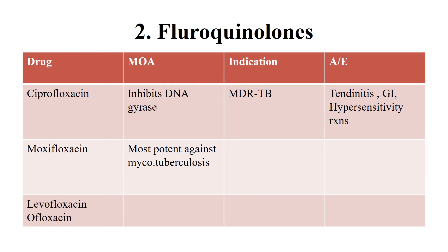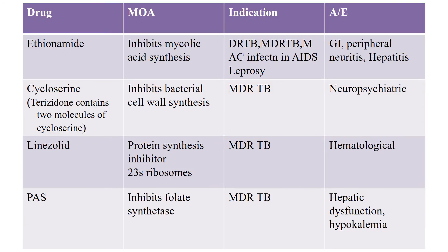The second group is fluoroquinolones. They act by inhibiting DNA gyrase, which is essential for nucleic acid replication. We have four fluoroquinolones active against Mycobacterium tuberculosis: ciprofloxacin, moxifloxacin, levofloxacin, and ofloxacin. The major indication for them in tuberculosis is multi-drug-resistant TB, and moxifloxacin is the most important fluoroquinolone. The usual adverse effects are tendinitis, gastrointestinal upset, and hypersensitivity reactions.